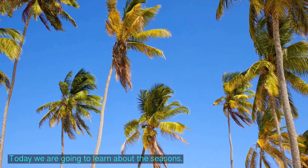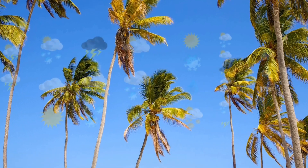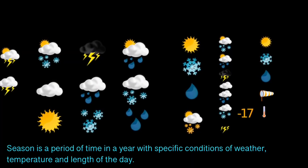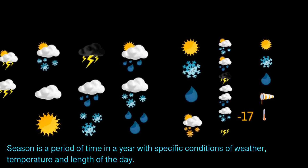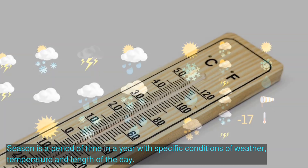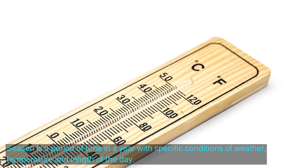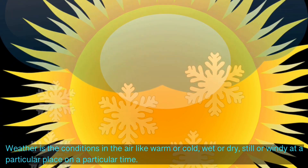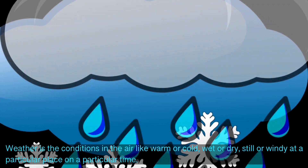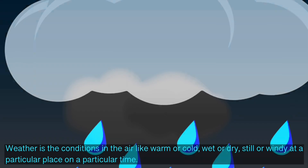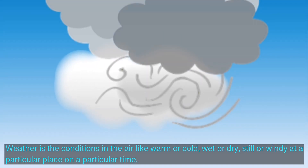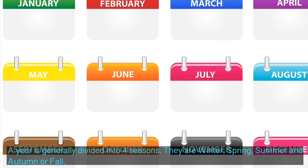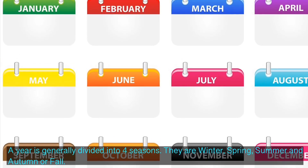So let's start. A season is a period of time in a year with specific conditions of weather, temperature, and length of the day. Weather is the conditions in the air — like warm or cold, wet or dry, still or windy — at a particular place at a particular time.